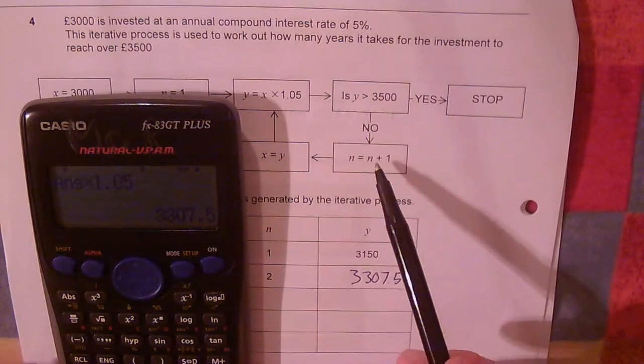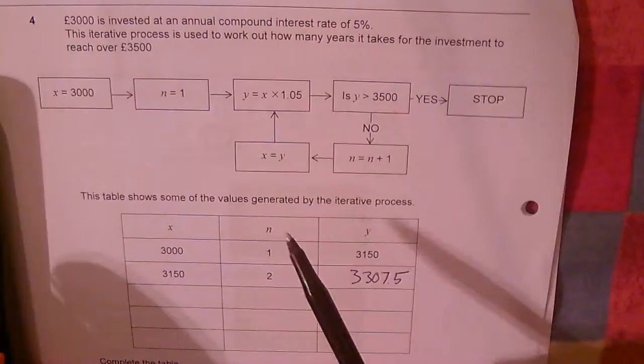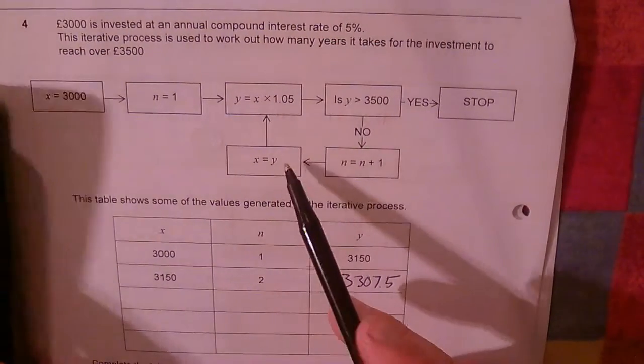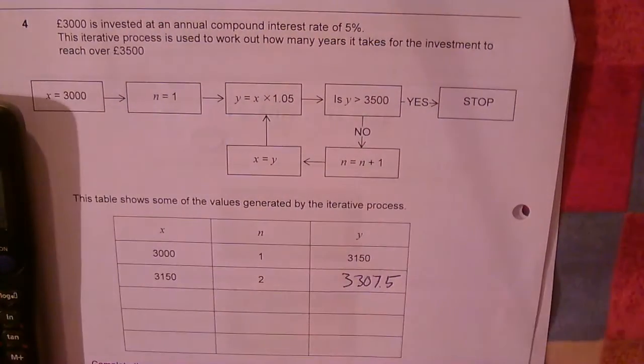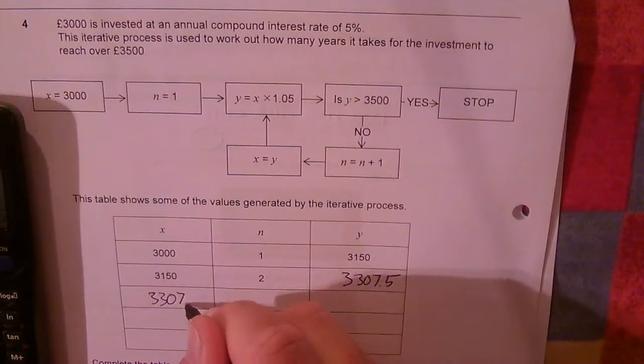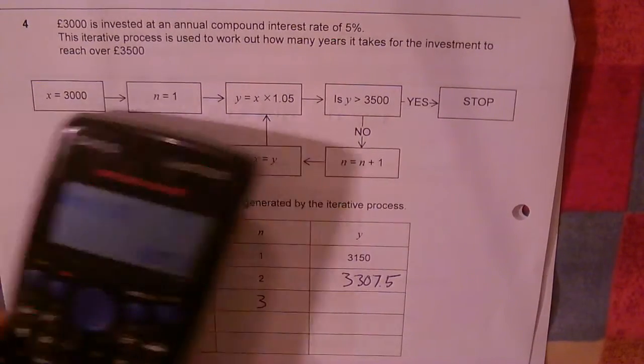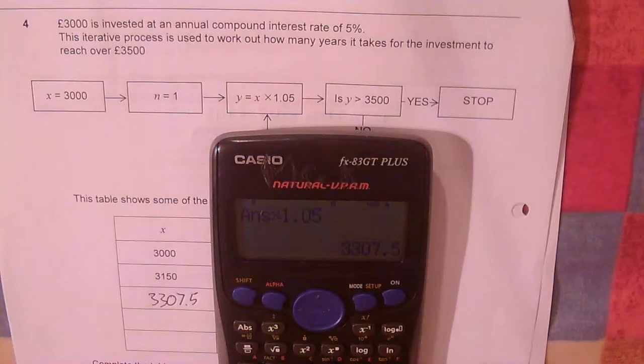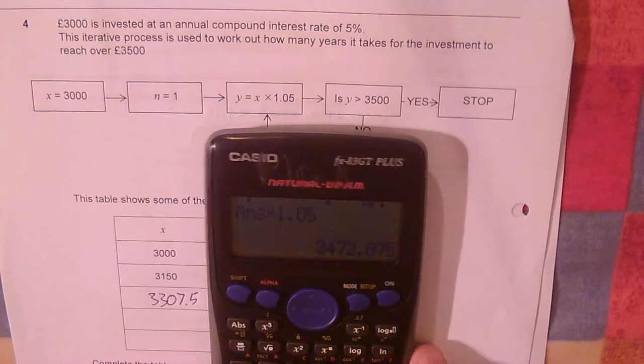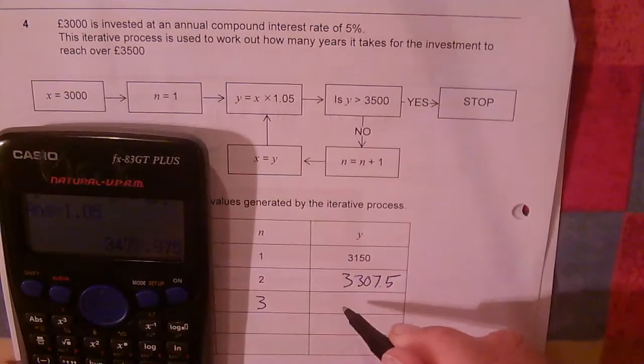Again, we go to the next stage of the iteration. My output becomes my input. £3,307.50. That's the third iteration. And I'm going to multiply that by 1.05, giving me £3,472.875.